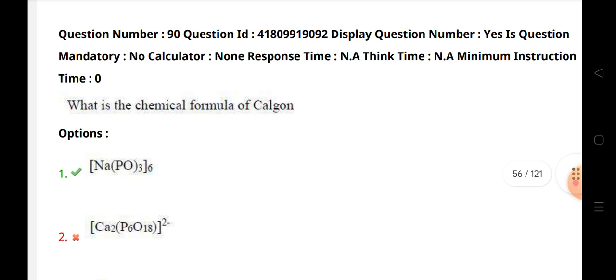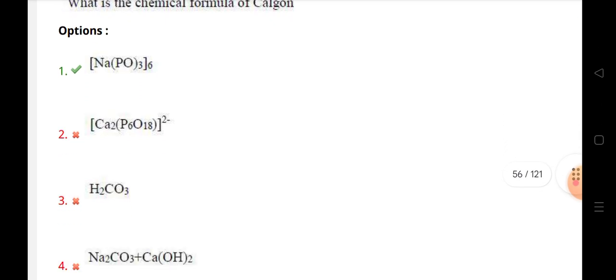What is the chemical formula of Calgon? Answer: Na2P3O6. It is the Calgon chemical formula.